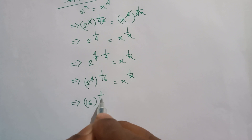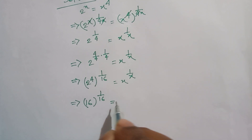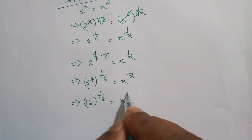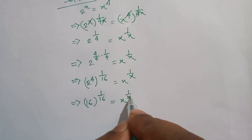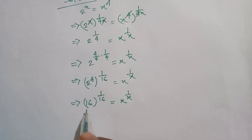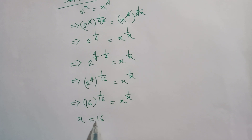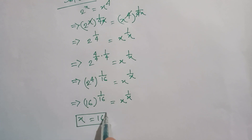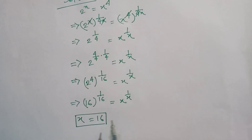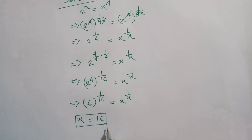So 16 to the power 1 divided by 16 is equal to x, all to the power 1 divided by x. Therefore x is equal to 16. This is the value of x. If you like this video, please subscribe to my channel for more videos. Thanks for watching, bye bye!